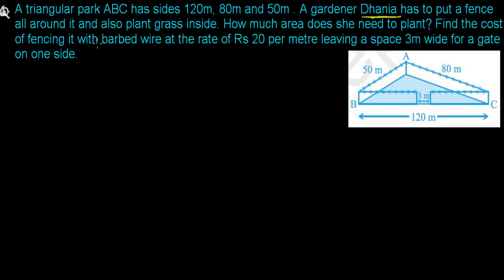The second part asks: find the cost of fencing it with barbed wire at a rate of 20 rupees per meter — rupees is Indian currency, but you can treat it as any currency unit. There is a gate that is 3 meters wide, so we need to leave that space. To find the fencing cost, we first need the total perimeter, then subtract 3 meters for the gate.